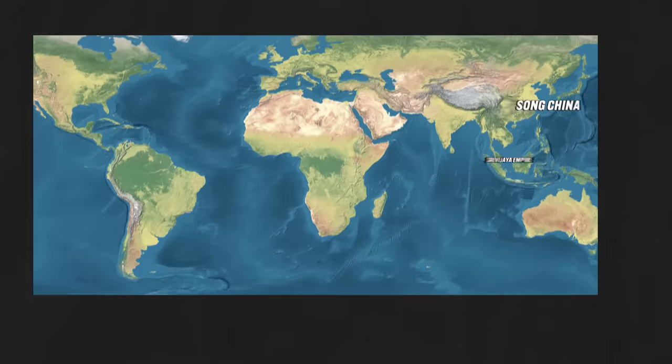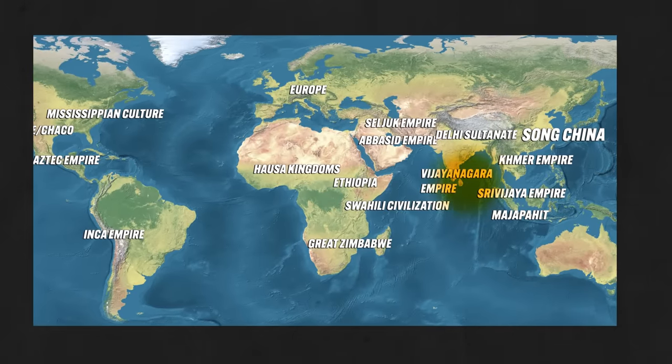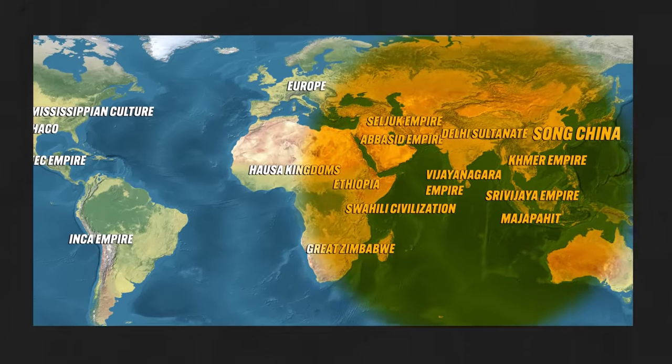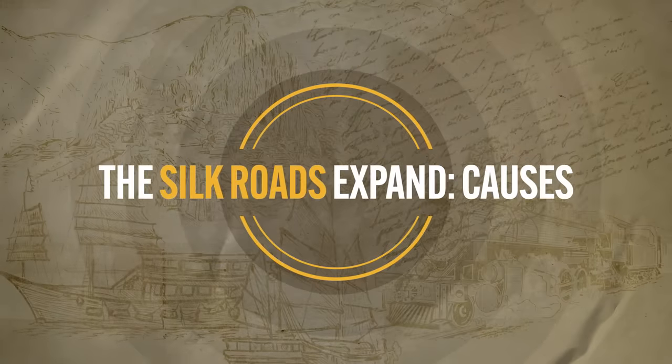Here in Unit 2 we're looking at many of the same places we looked at in Unit 1, but through the lens of connection — like how are all these various states connected to each other? The answer: networks of exchange, like the Silk Road. We need to consider the causes and effects of why these networks grew and expanded during this time period.